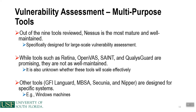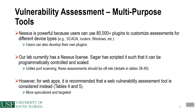Nessus is the most mature and well-maintained tool, specifically designed for large-scale vulnerability assessment. Retina, OpenVAS, Saint, and QualysGuard are also popular but not as well-maintained, and it's unknown whether they scale effectively. Scalability is crucial because large organizations can have tens of thousands or even hundreds of thousands of devices, software applications, and machines on their networks. Tools like GFI LandGuard, MBSA, Secunia, and Nipper are designed for specific systems and may not be as versatile as Nessus across multiple device types.